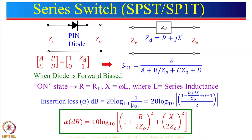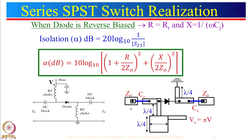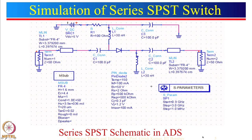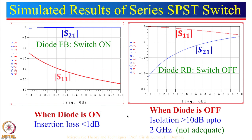We discussed several configurations of SPST. We started with the series SPST switch, derived ABCD parameters, then S-parameters, and derived expressions for insertion loss and isolation. Insertion loss is defined when the switch is in the on position; isolation is defined for the switch in the off position. We showed circuit simulation using ADS software: insertion loss is less than 1 dB when the diode is on, but isolation is only about 10 dB up to about 2 GHz and very poor beyond that.